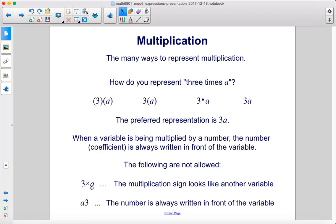The following are not allowed. 3 times a with an x, because the multiplication sign looks like an x. It could be mistaken for an x variable instead of the multiplication sign. And a3. The number is always written in front, so it would be 3a, not a3.